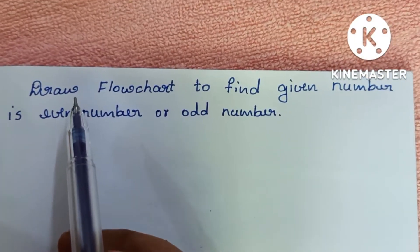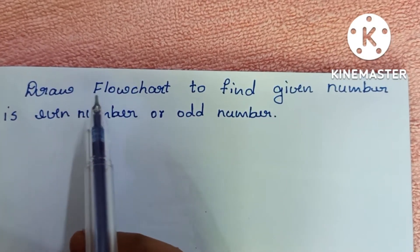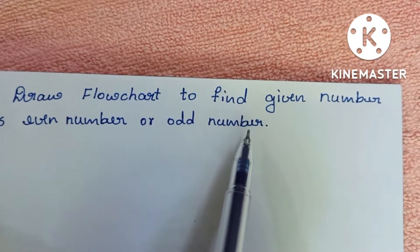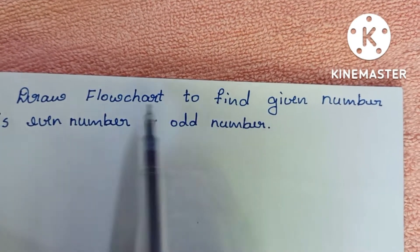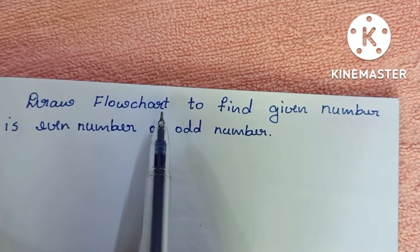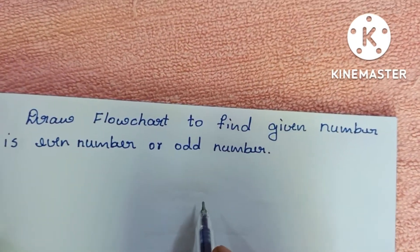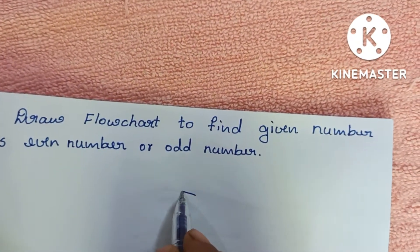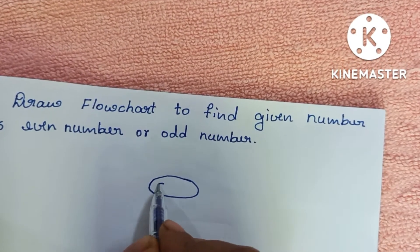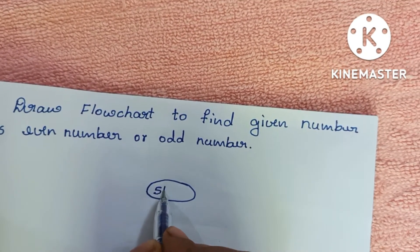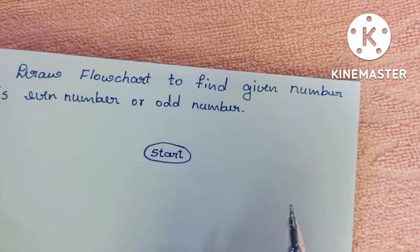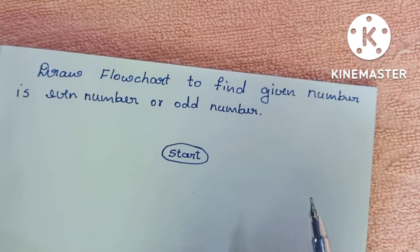In this video we are going to learn how to draw a flowchart to find whether a given number is even or odd. A flowchart is a graphical representation of a solved problem. A flowchart always starts with the start statement, which is written within an oval shape.